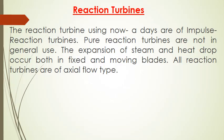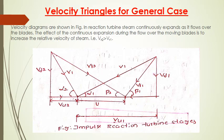Reaction turbines used nowadays are impulse-reaction turbines; pure reaction turbines are not in general use. The expansion of steam and heat drop occurs in both fixed and moving blades. All reaction turbines are of axial flow type. For the combined velocity triangle of a reaction turbine, in a reaction turbine steam continuously expands as it flows over the blades, so the relative velocity vr2 is greater than the relative velocity vr1 at inlet.